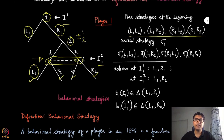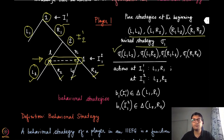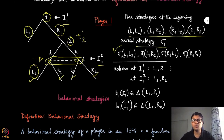By the definition of mixed strategy in the classical way that we have defined it for normal form games, we are going to assign probabilities for each of these pure strategies. So a mixed strategy in this context for player one will be a probability mass which gives probabilities to all these pure strategies. These numbers should always be non-negative and should sum to one.